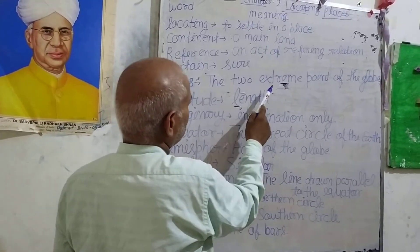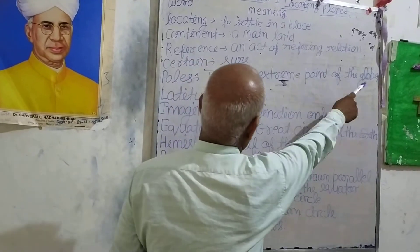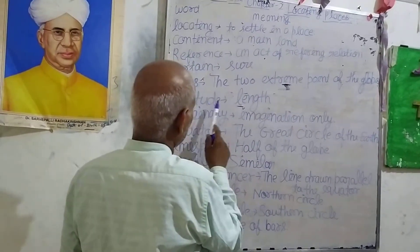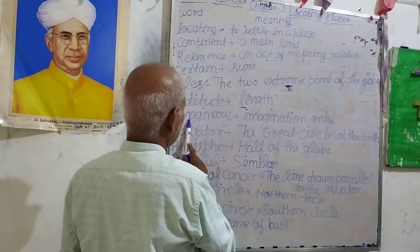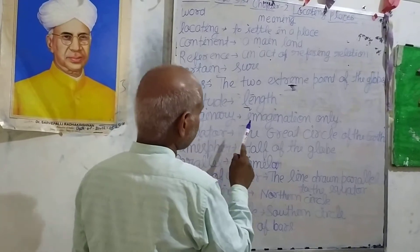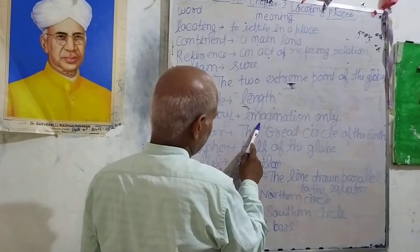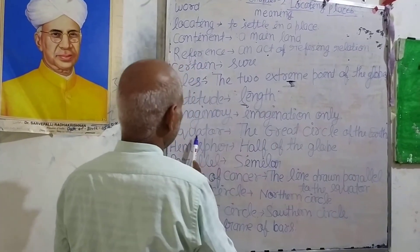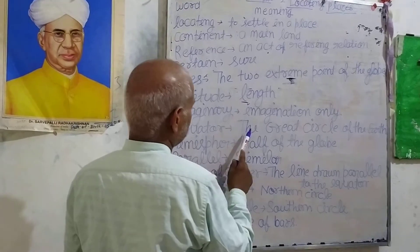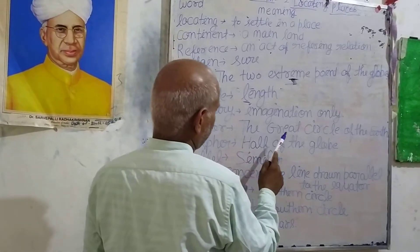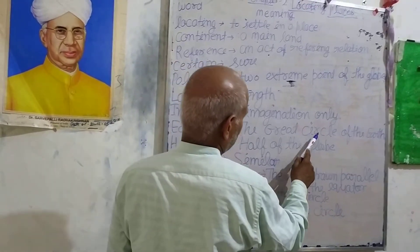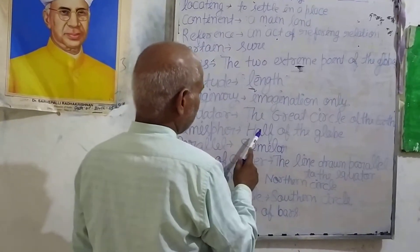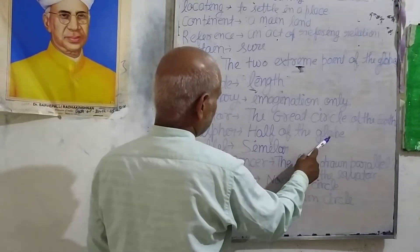The two extreme points of the globe. Latitude — length. Imaginary — imagination only. Equator — the great circle of the earth. Hemisphere — half of the globe.